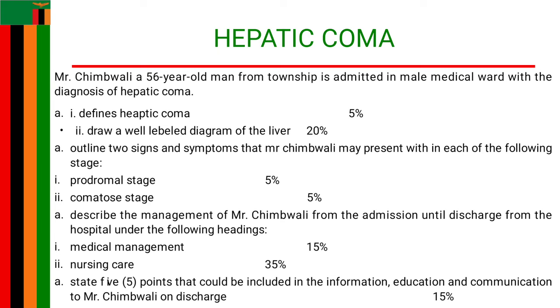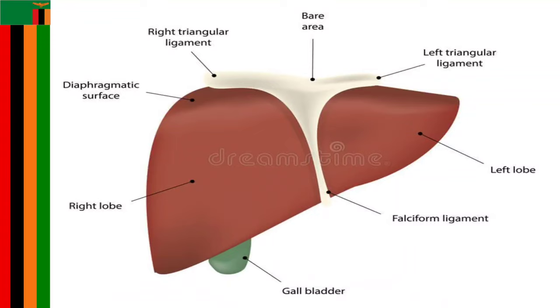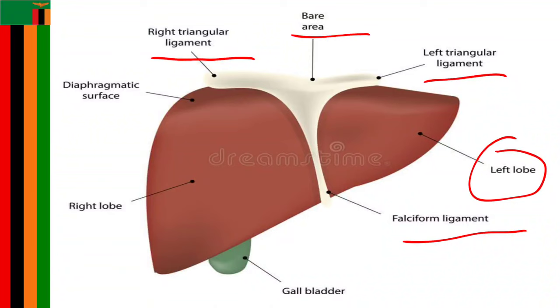When we talk about the drawing of the liver, we can draw something that shows the right triangular ligament, the bare area, the left triangular ligament, the left lobe, the falciform ligament, the gallbladder — which is just an appendage of the liver — the right lobe, and of course we also need to show where the hepatic ducts are as well.